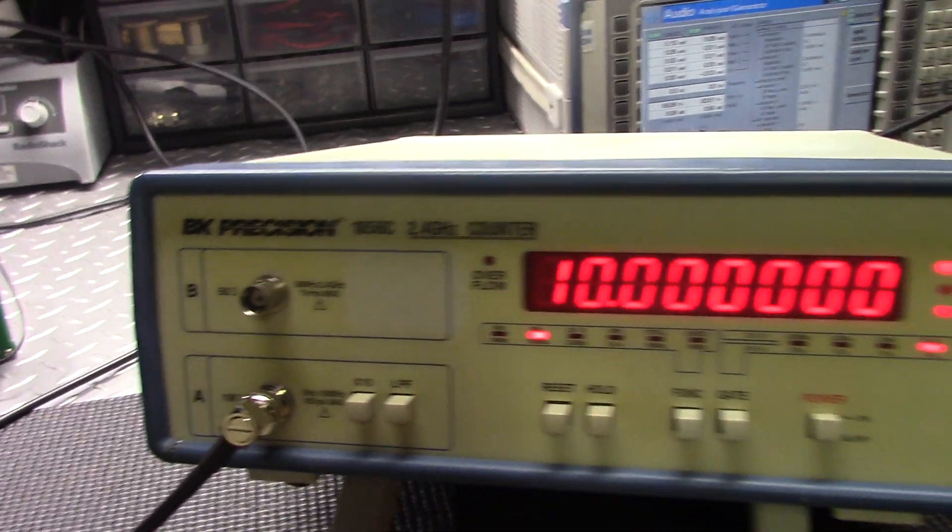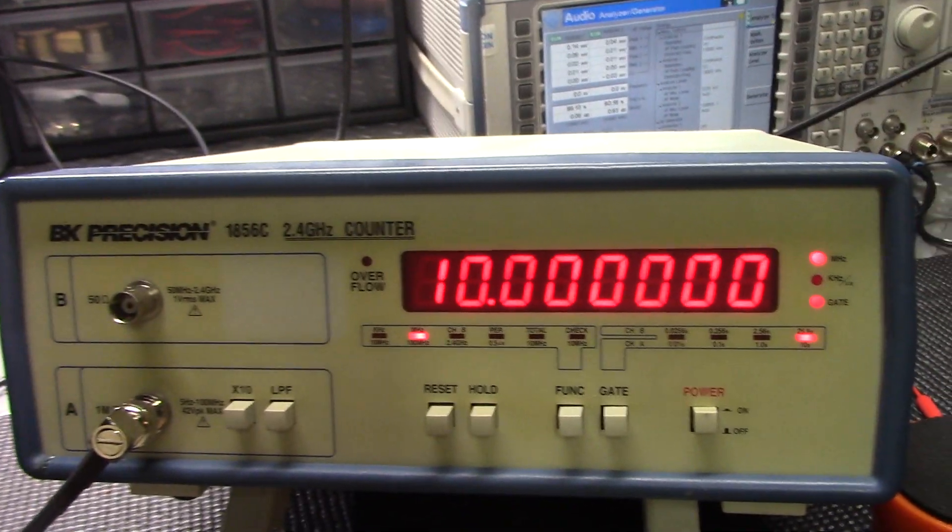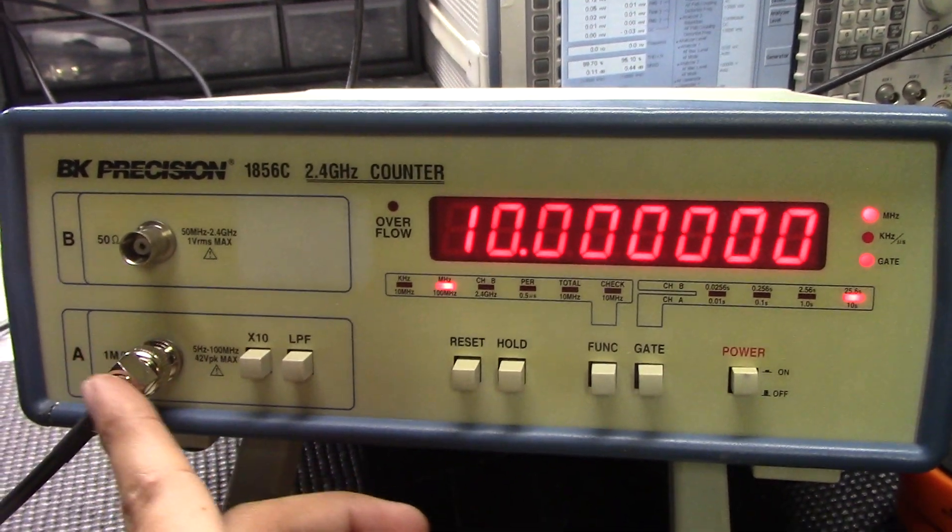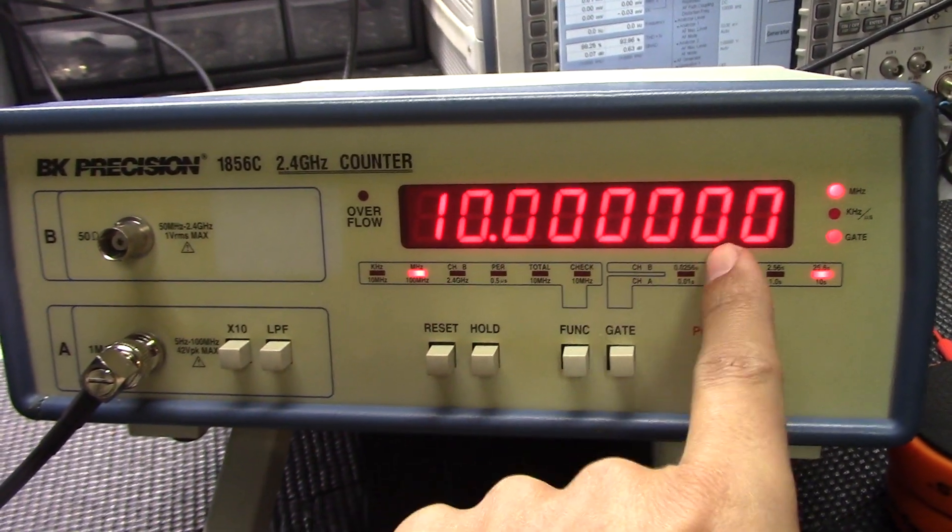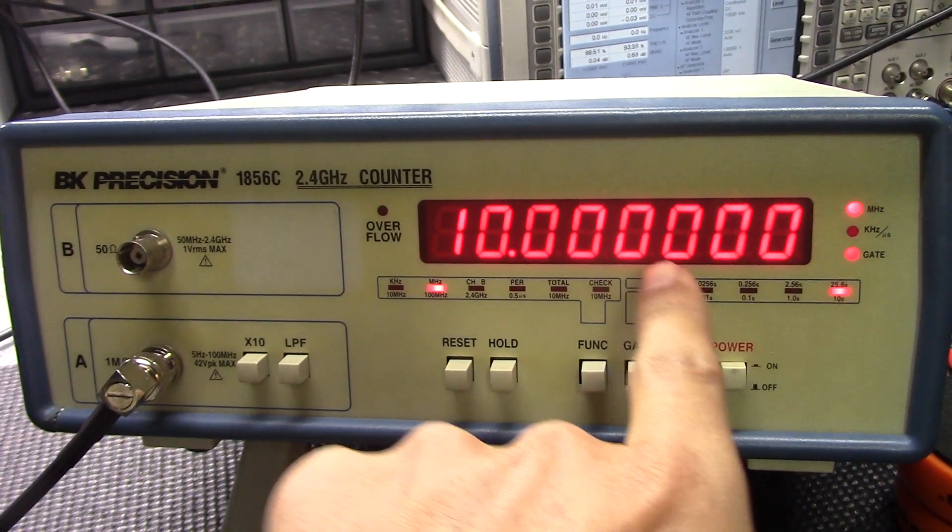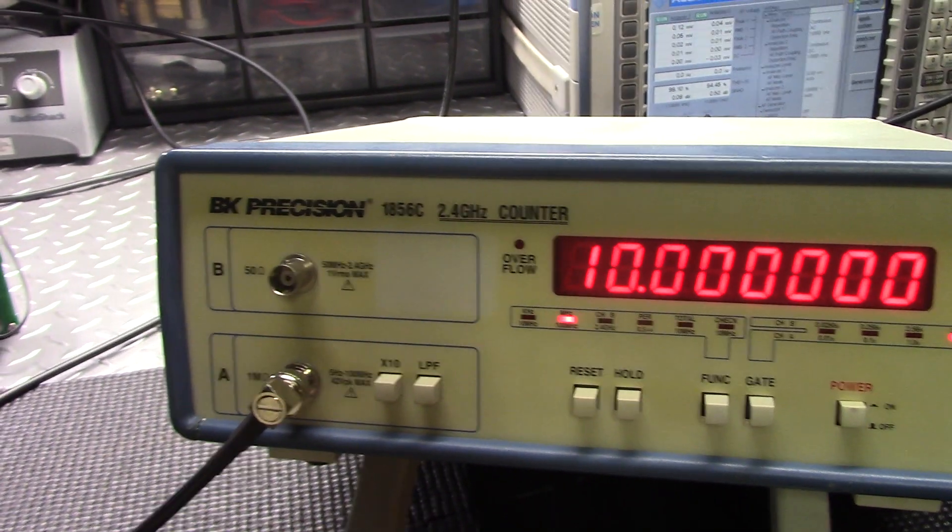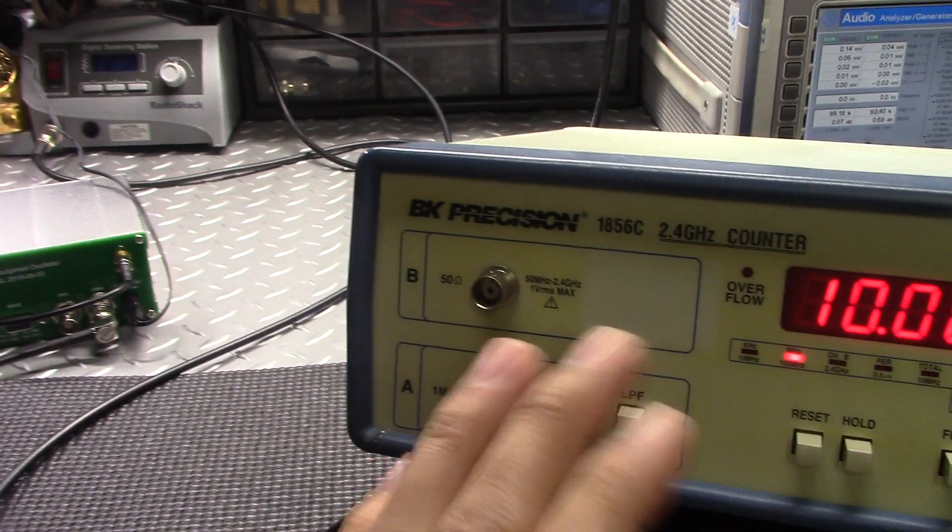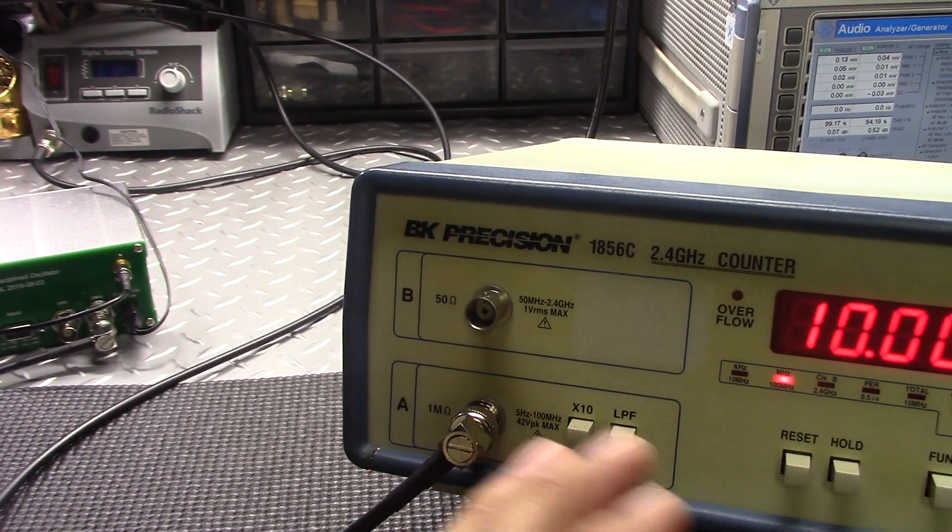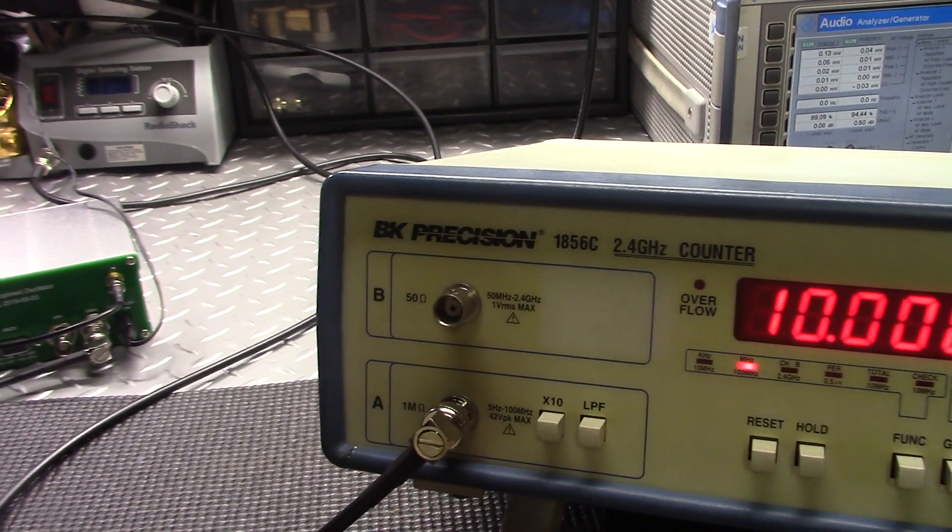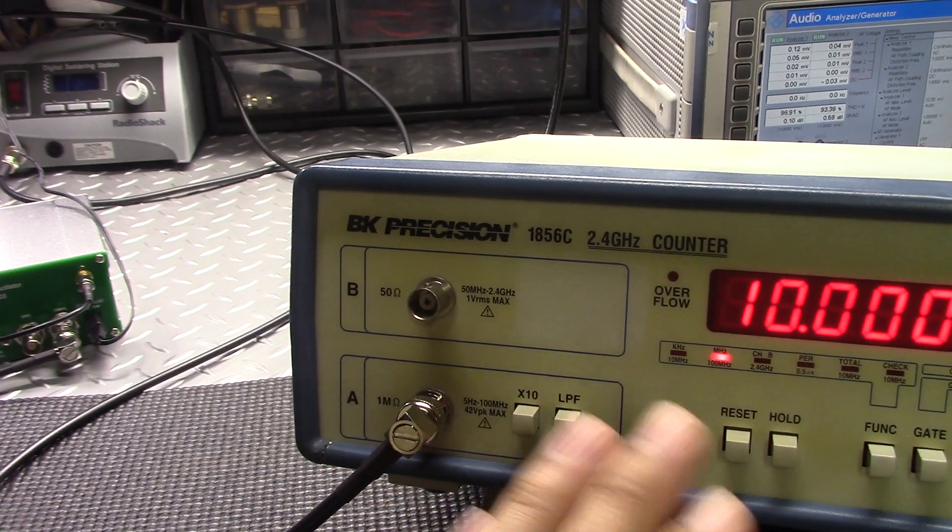You hook that into your new counter, you check the output. That's what I'm doing right here. I'm showing you guys this thing's right on. 10 right across the board, all eight digits lined up, so I know my counter is good. Now when I line up a radio, I know it's lined up accurately.